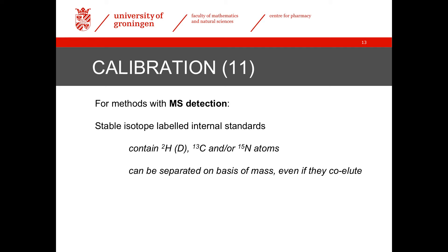For LC-MS methods, the use of stable isotope-labeled internal standards is widespread. These molecules are exactly the same as the analyte, but they contain a number of heavy atoms, such as deuterium instead of hydrogen, 13C instead of the normal 12C, or 15N rather than 14N. Stable isotope-labeled internal standards are ideal, because they have exactly the same properties as the unlabeled analytes, but they give a separate response in a mass spectrometer because of the mass difference.